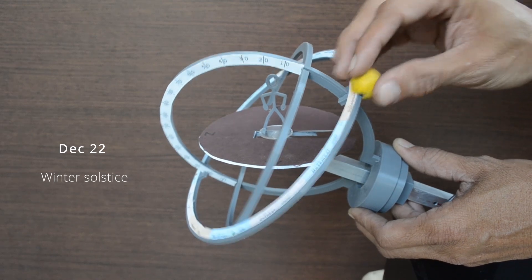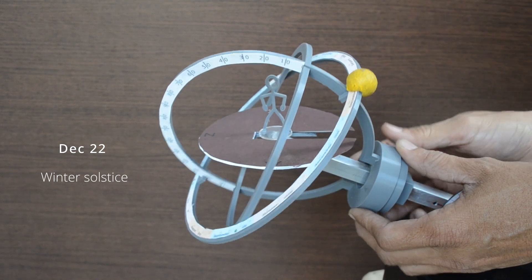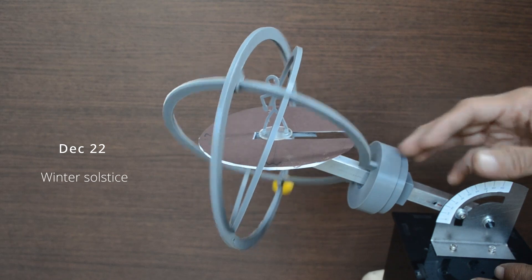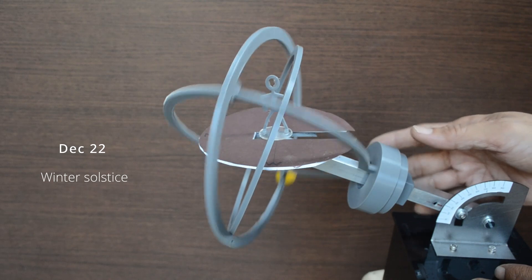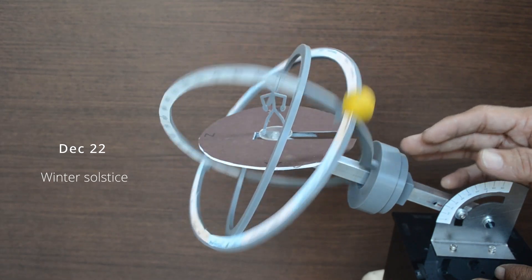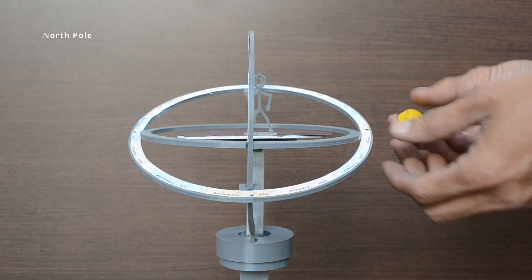December 22nd is winter solstice, shortest day and longest night in the northern hemisphere. On this day, sun is at its lowest daily maximum elevation. How about the north pole?